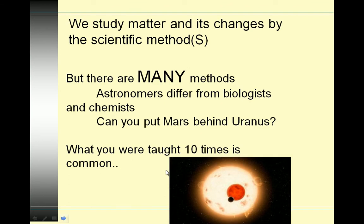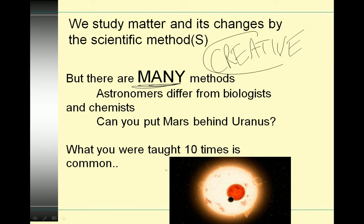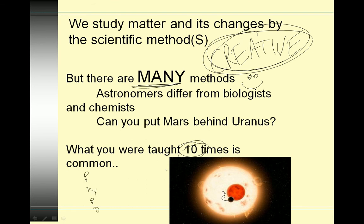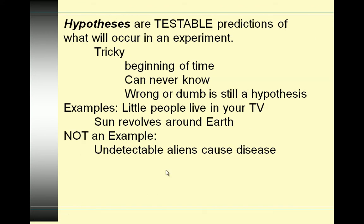We study matter and its changes by the scientific methods. There are many methods — this is important. Scientists have so many different ways to study things because science is a creative endeavor. Astronomers differ from biologists and chemists. Can you put Mars behind Uranus? You can't move these things. So astronomers cannot do controlled experiments where they move things around. What you were taught many times in school is common — purpose, hypothesis, procedure, data, and so on. You should know what order they go in.